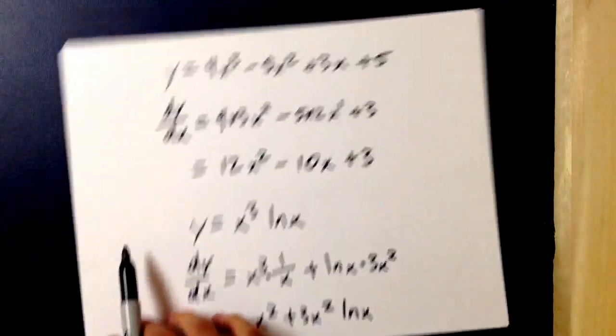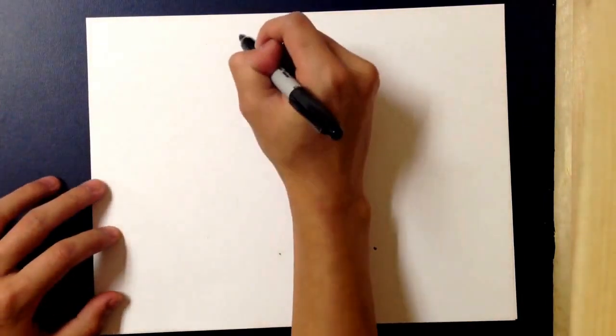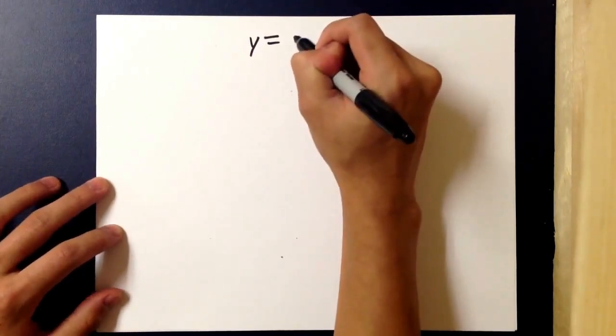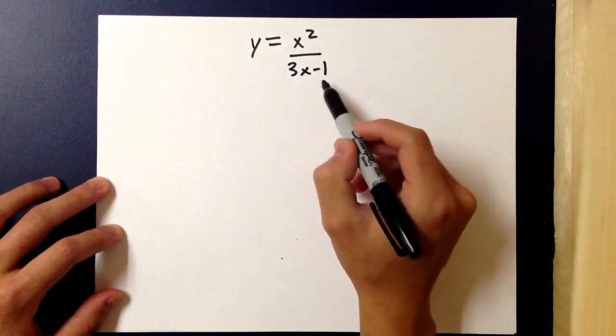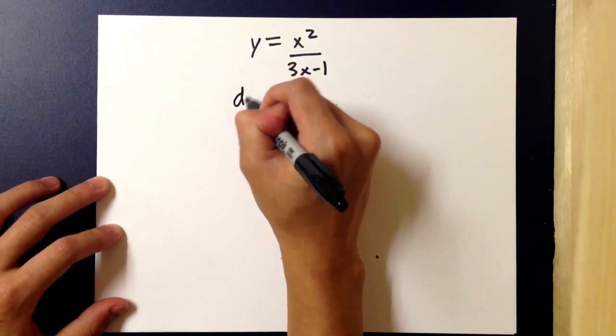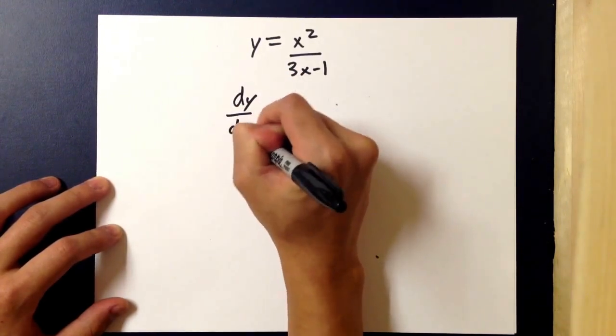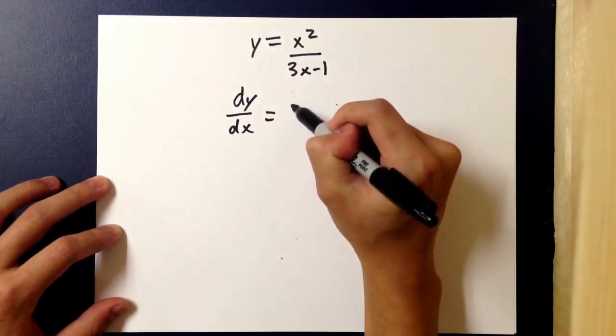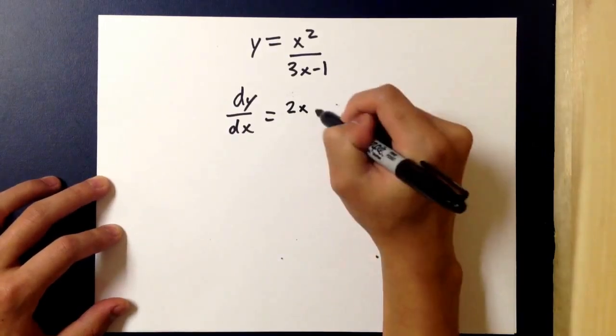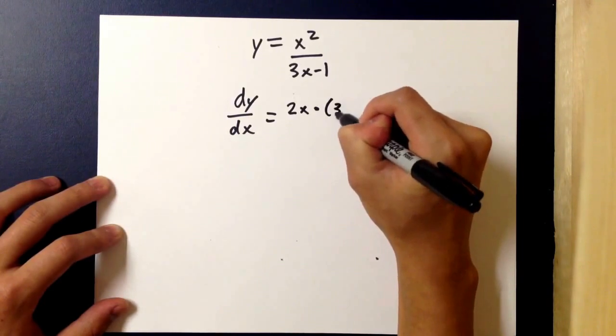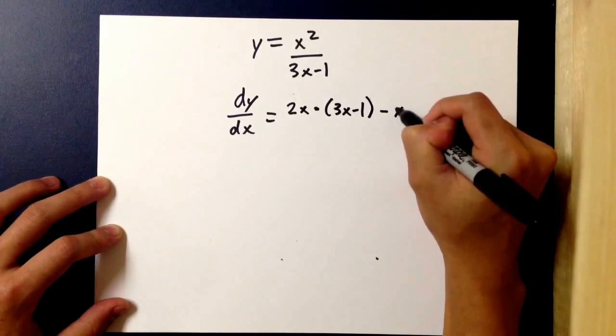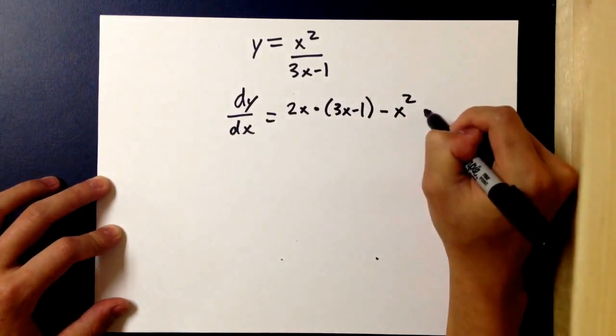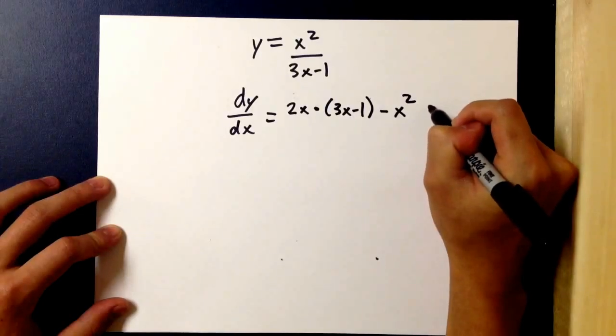An example of this would be if y equals x squared over 3x minus 1, where x squared is g of x and 3x minus 1 is h of x. So, dy/dx in this case would be 2x, which is the derivative of the top, times the lower which is 3x minus 1, and then subtracted by x squared, which is just the original top,